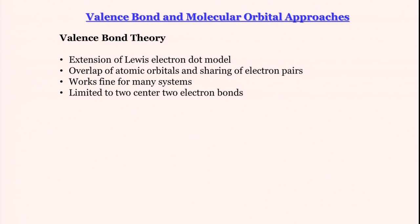It is strictly written for two-center two-electron situations, that is where Lewis model works best. So if there is anything other than two centers, if there is delocalization, then valence bond theory does not work.